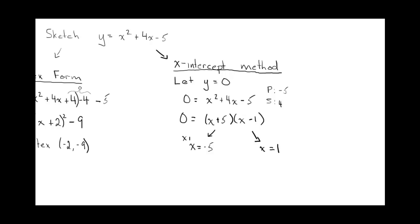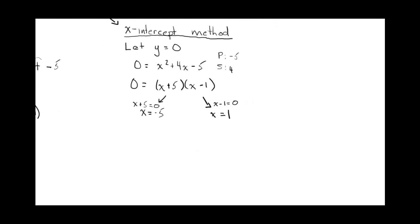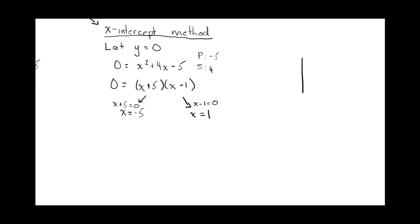Maybe I skipped a step there. x plus 5 equals 0, which means x equals negative 5. And x minus 1 equals 0, which means x equals 1. So now you've found two points on the curve. You've found the two x-intercepts.